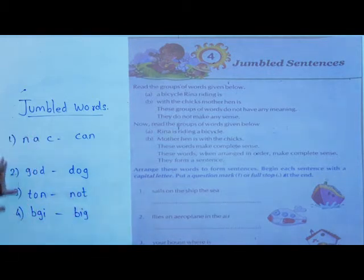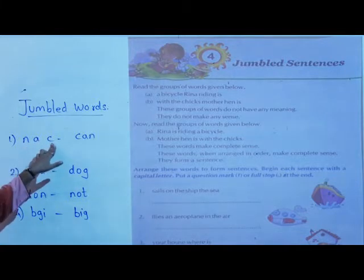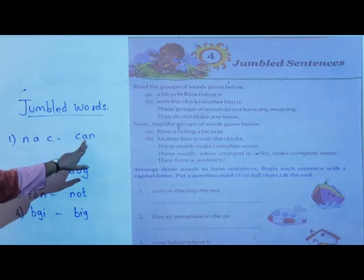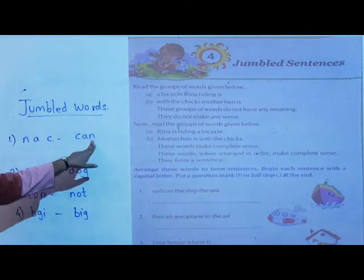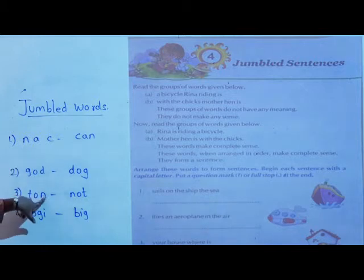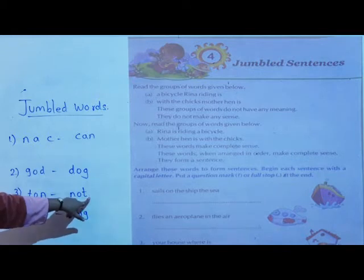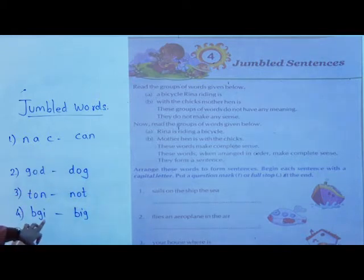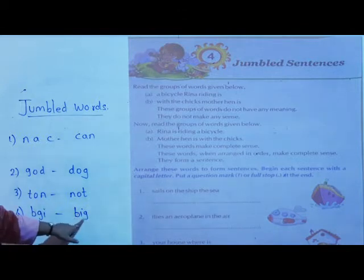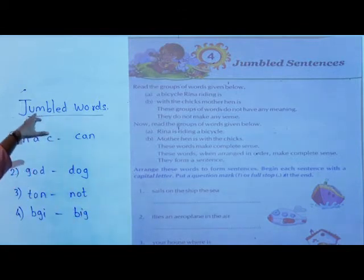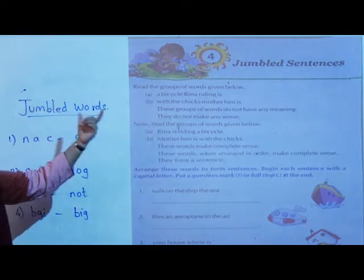Now you can see, in these four words we have seen: 'n, a, c' doesn't have meaning, but 'c, a, n' does — 'can'. Then 't, o, n' doesn't have meaning, but 'n, o, t' does — 'not'. And 'b, g, i' becomes 'b, i, g' — 'big'. We have just seen how jumble words work.